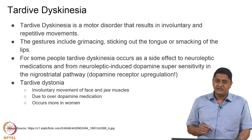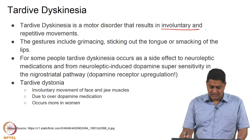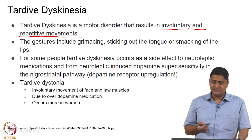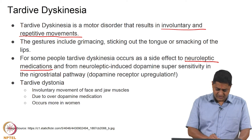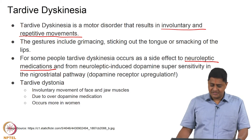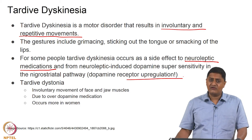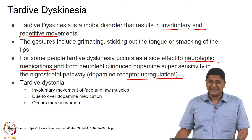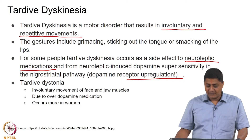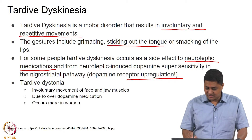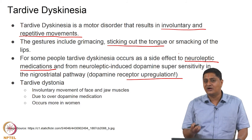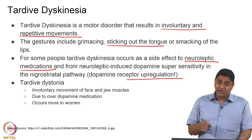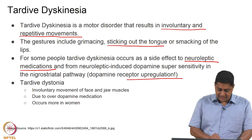Another disease is tardive dyskinesia. In this case, there are involuntary and repetitive movements caused usually as a side effect of neuroleptic medications and dopamine supersensitivity — in other words, up-regulation of dopamine receptors. This leads to frequent grimacing, sticking out the tongue, smacking of the lips, or various other unwanted and socially awkward movements. One particular form is tardive dystonia.